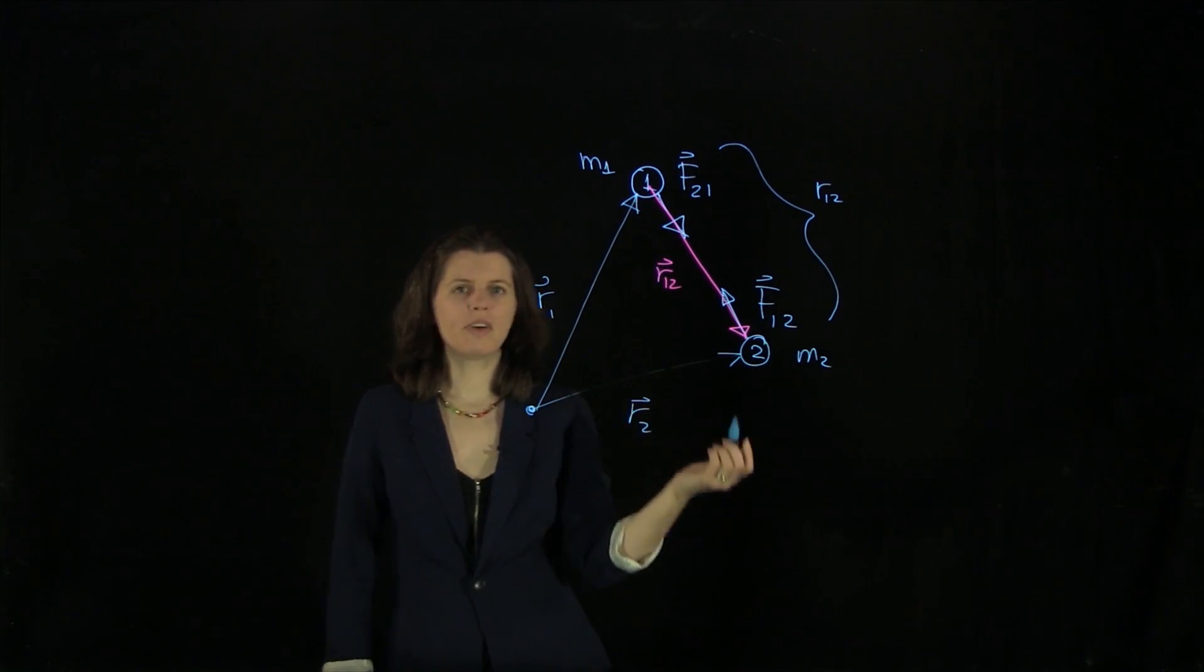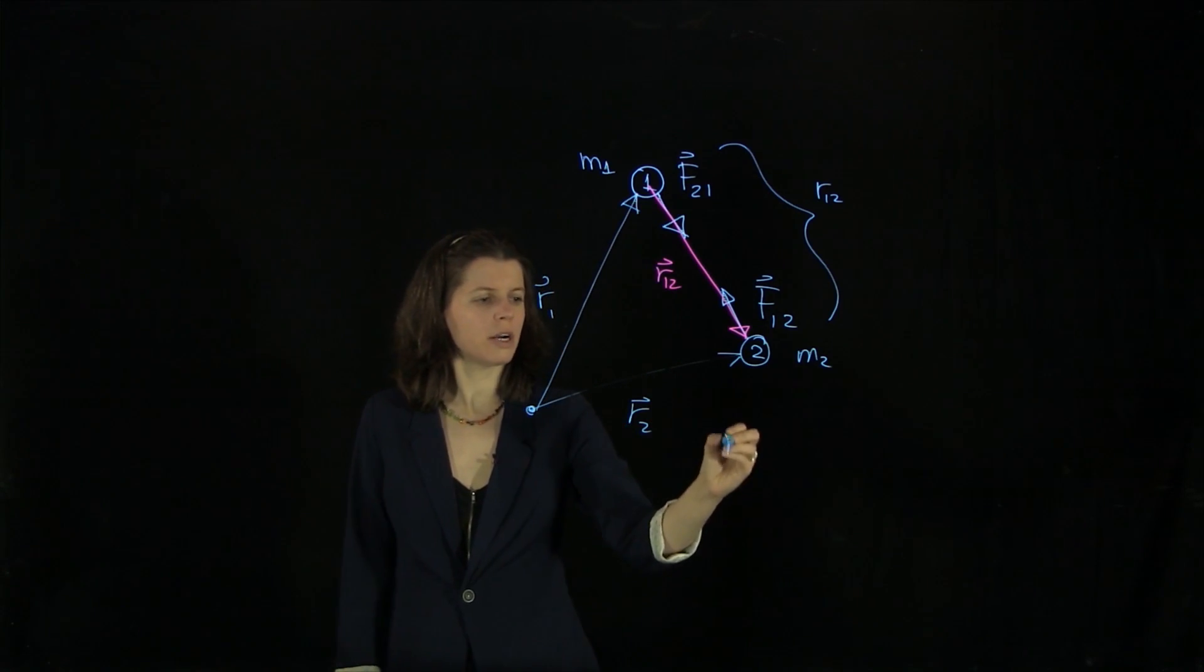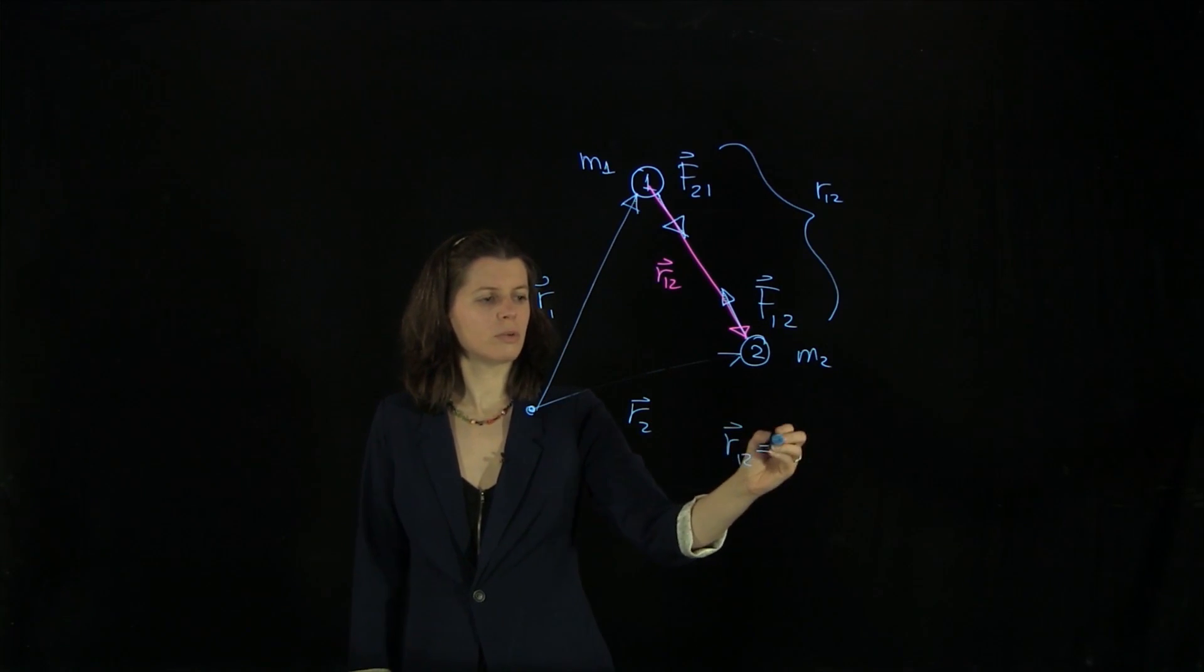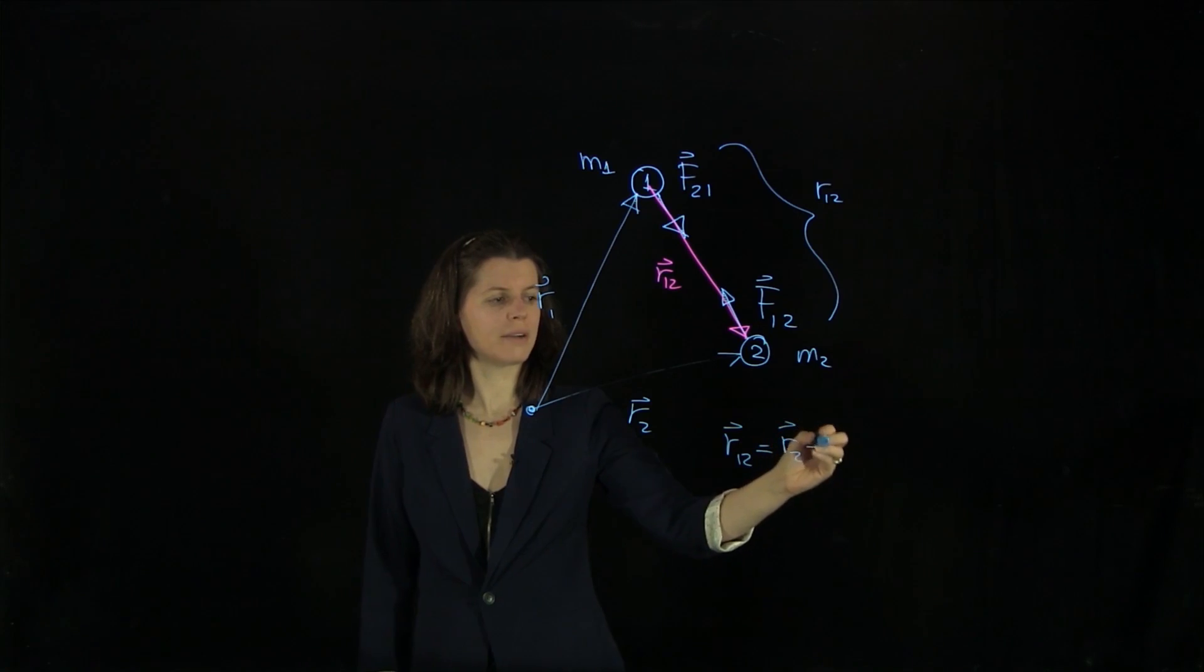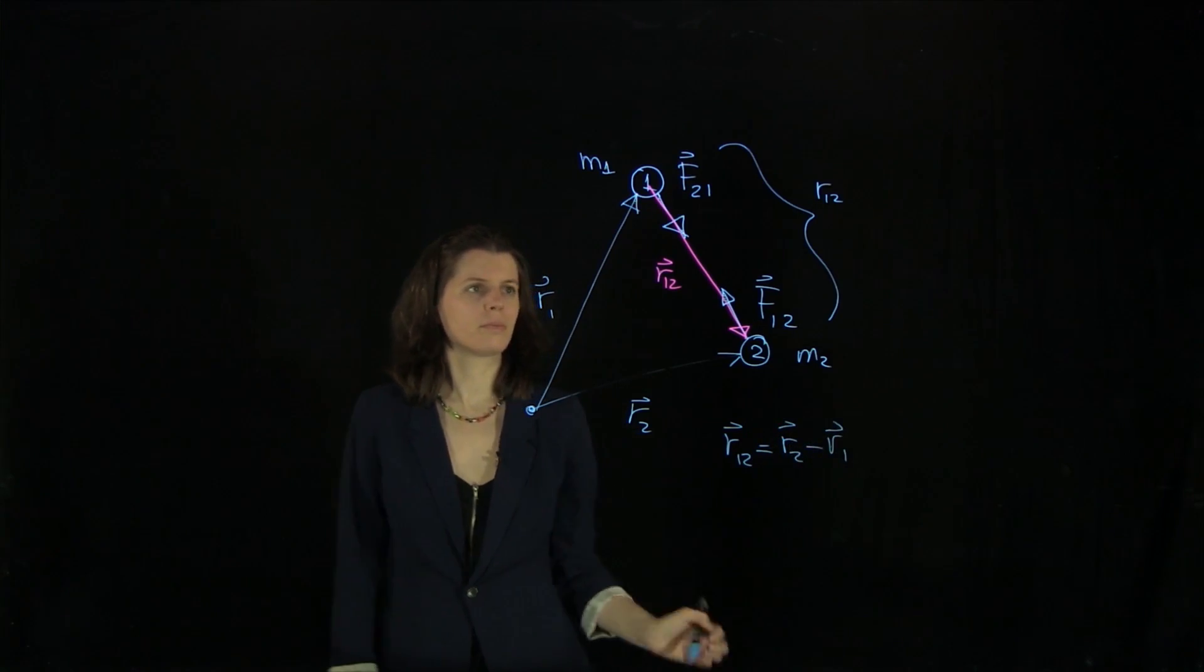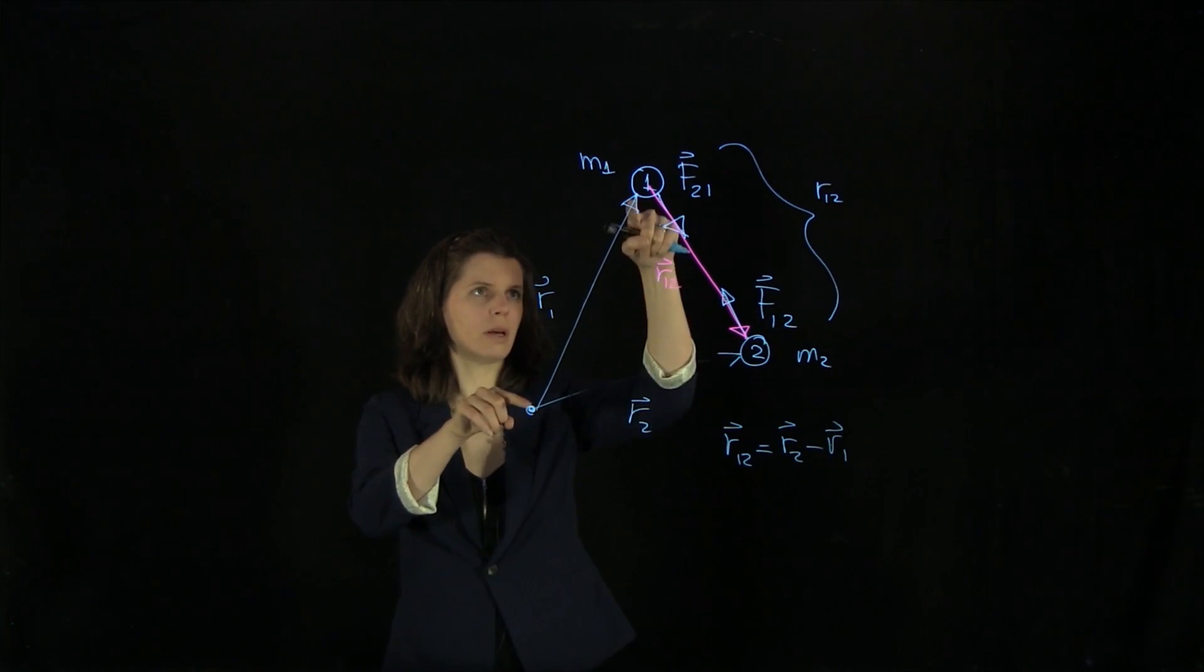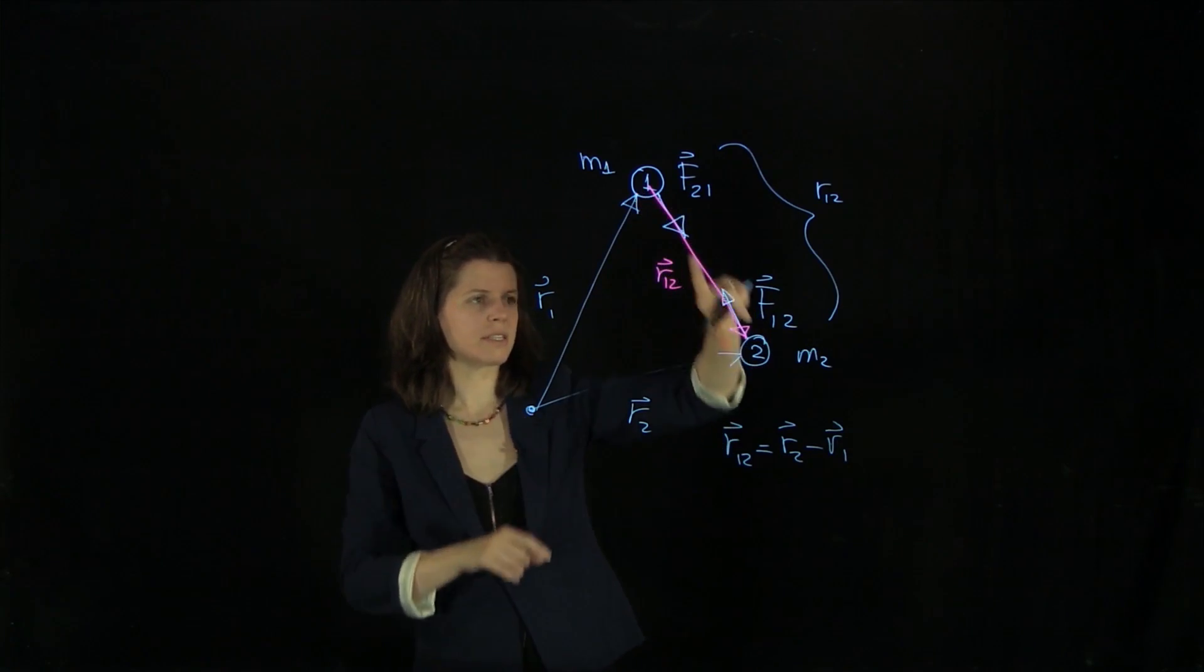And actually, we know from vector decomposition that r12 equals r2 minus r1. So just this minus this gives us this distance here.